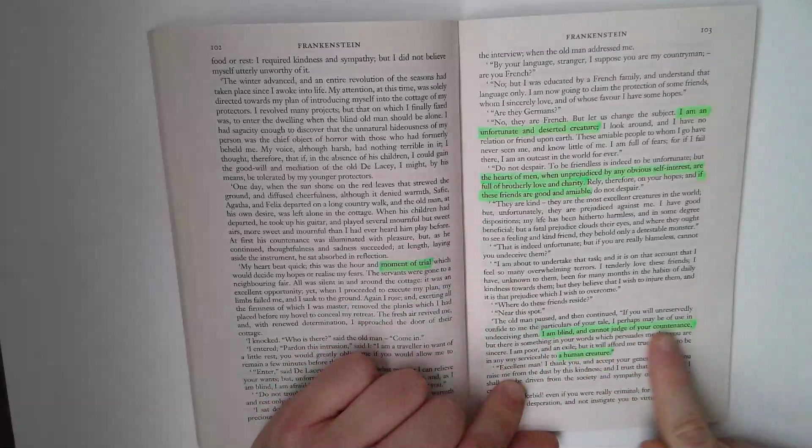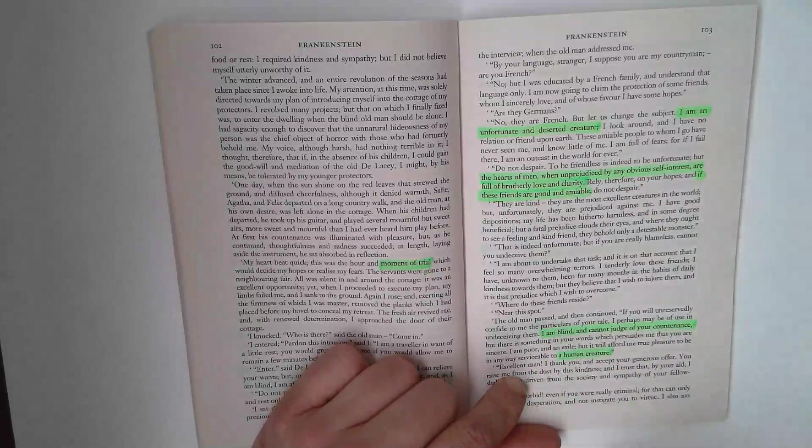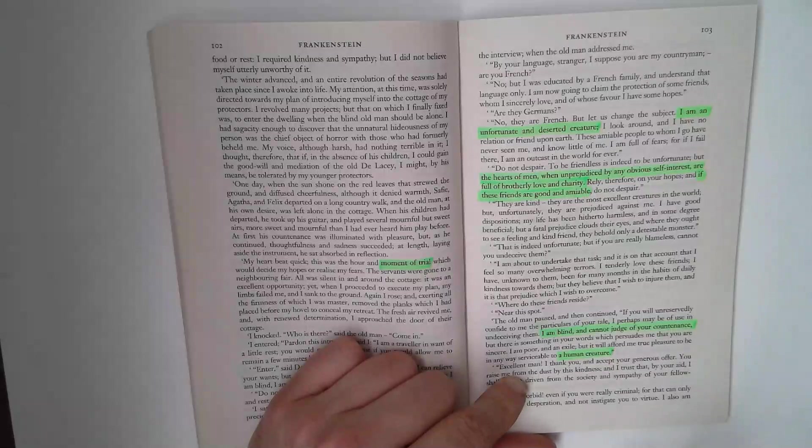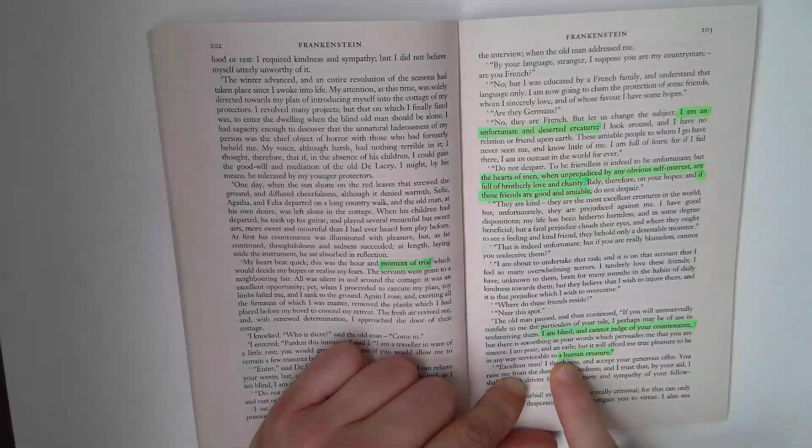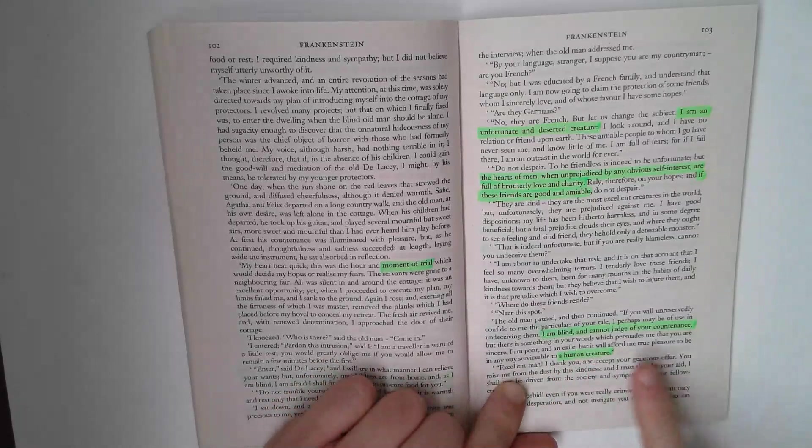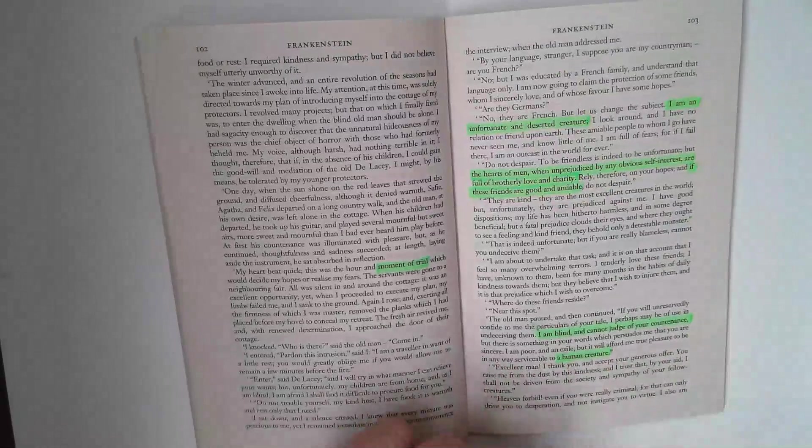I am blind and cannot judge of your countenance. This blindness is quite important as a theme because of course he can help them. And interestingly, Shelley has old man DeLacy referred to the creature as a human creature. It will afford me true pleasure to be in any way serviceable to a human creature, and we believe that.